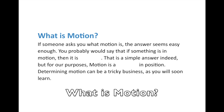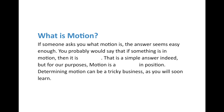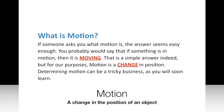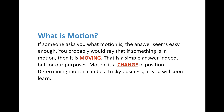If someone asks you what motion is, the answer seems easy enough — you'd say if it's in motion, that means it's moving. But for our purposes, we need to define it scientifically. Motion is any change in position of an object. Determining what motion is and what motion isn't can actually be a really tricky business, as you're going to learn in the next section.